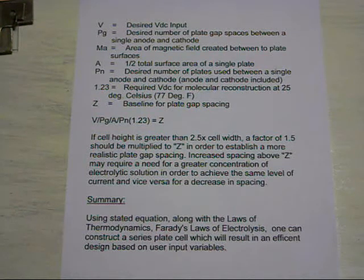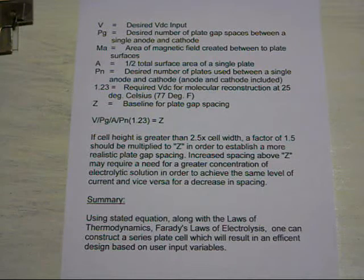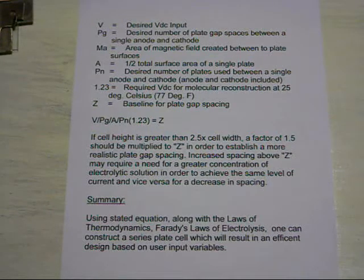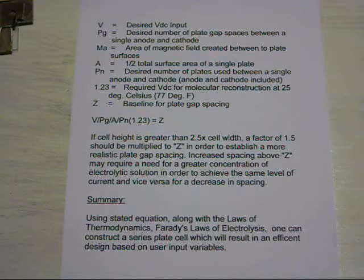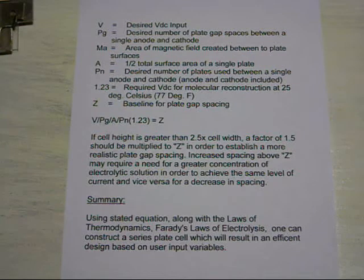I want to read something to you, and this goes back to Faraday's Laws of Electrolysis, which there are two of. The first one says — and I quote — 'The mass of a substance altered at an electrode during electrolysis is directly proportional to the quantity of electricity transferred at that electrode.' Quantity of electricity refers to electrical charge, typically measured in coulombs, and not to electrical current. In the first law, there is no mention of a magnetic field.